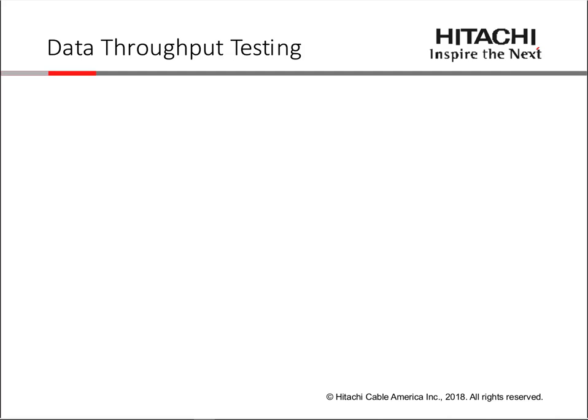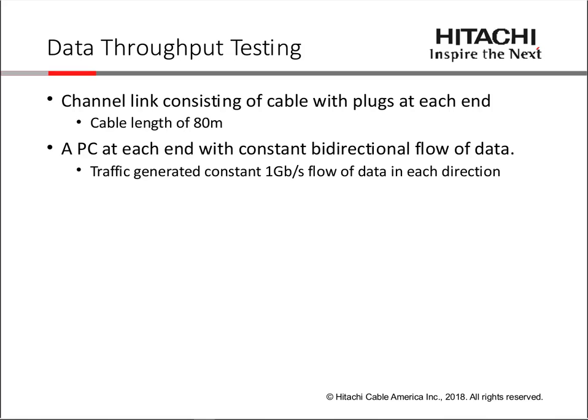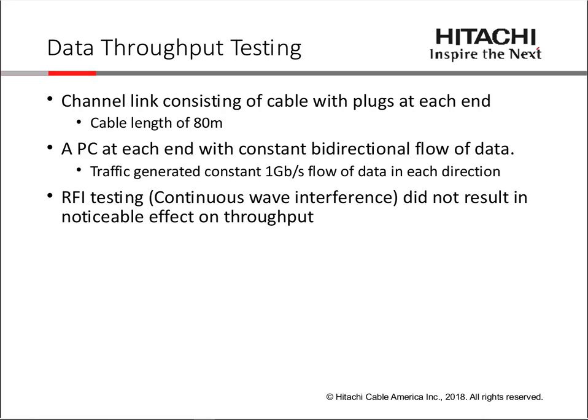To put this together, we set up a testing situation with a couple of computers connected to an 80-meter cable with plugs at each end — not a four-connector channel, just plugged directly into the network cards — with a PC at each end and bidirectional data flow. We generated traffic and did the RFI testing with continuous wave. Based on past data, not too surprisingly, we did not see a lot of noticeable effect on throughput. When we subjected the cable to continuous wave interference, there was essentially no impact on data rate throughput.